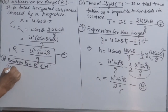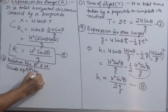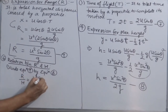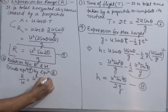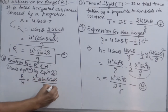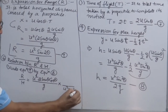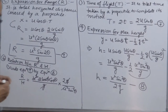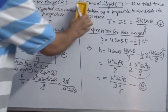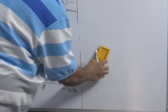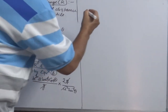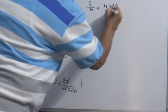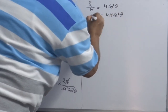We can derive a relation by dividing equation 9 by equation 8. R over H equals u² times 2 sinθ cosθ over g, divided by u² sin²θ over g. G cancels, u² cancels, one sinθ cancels, leaving 4 cosθ over sinθ, which is 4 cotθ. So R over H equals 4 cotθ, which means R equals 4H cotθ. You have got another useful relation.